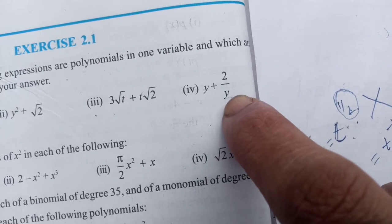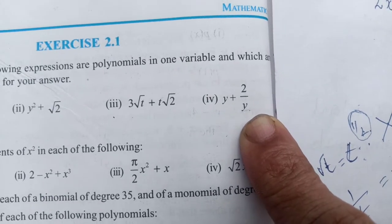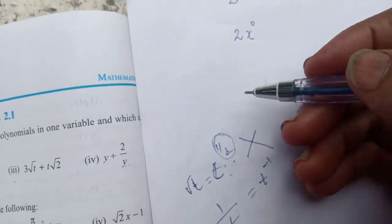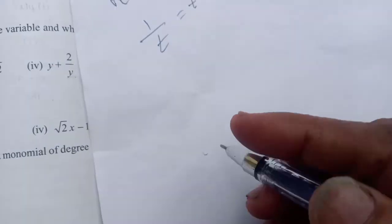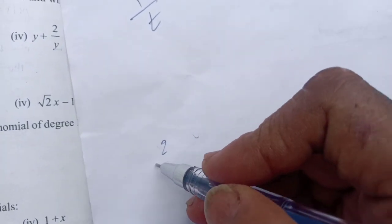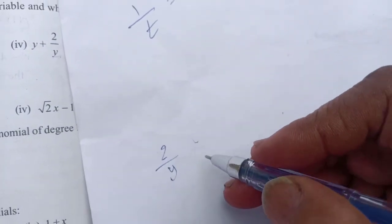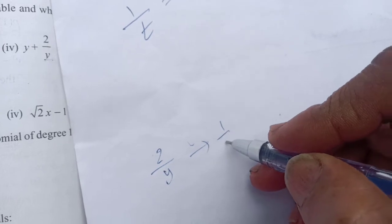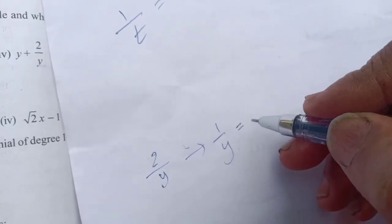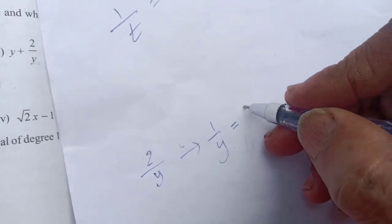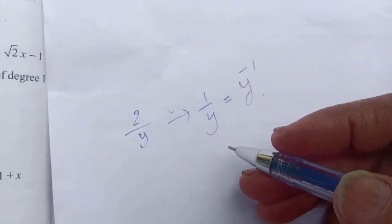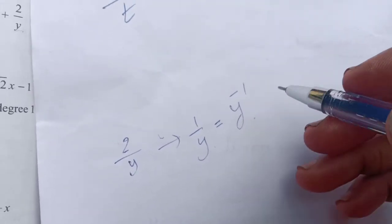Why? Because 2/y, that is 2 divided by y. We need to take 1/y in this case. 1/y is y raised to minus 1.